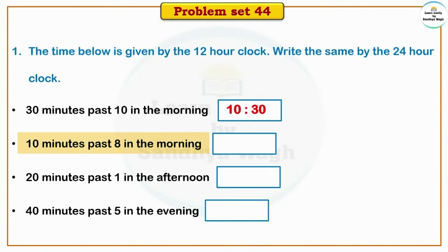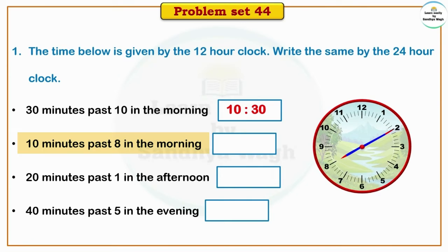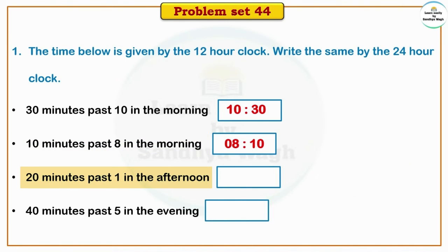Next is 10 minutes past 8 in the morning. In the 12-hour clock, this is shown as 10 minutes past 8 in the morning. In the 24-hour clock, since this is a morning time, 10 minutes past 8 is shown as 8.10.